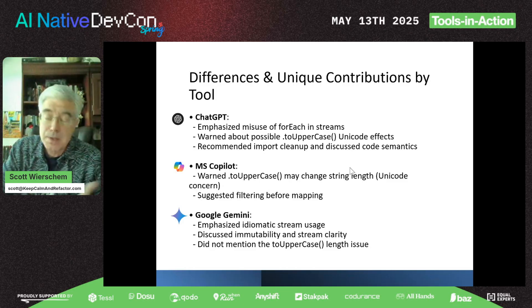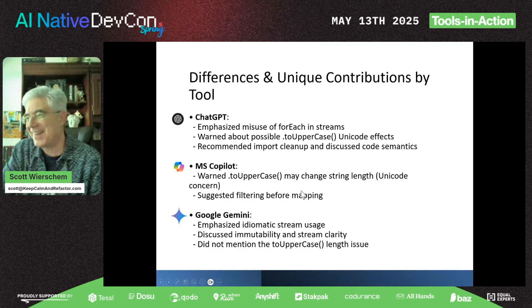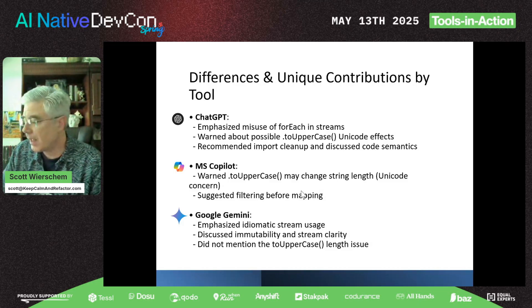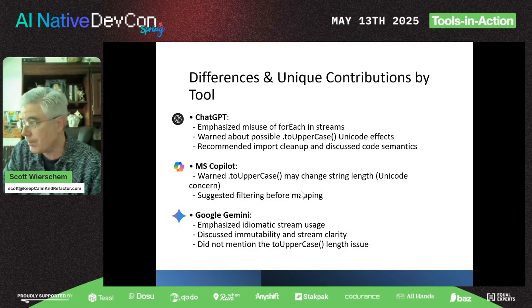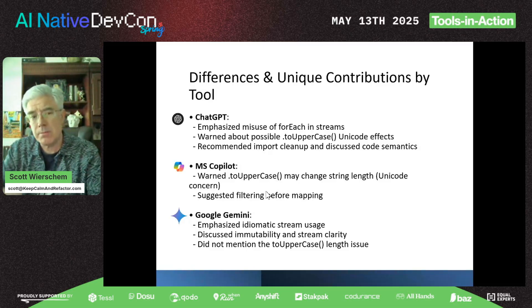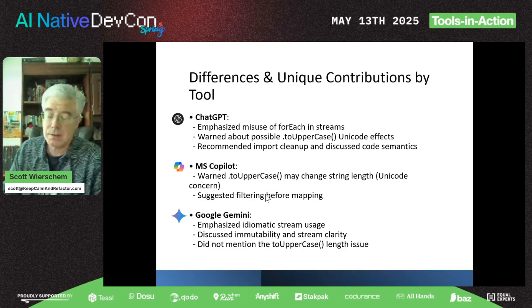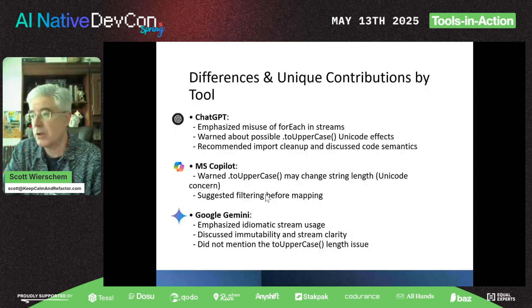Since I'm a Windows developer, I tried MS Copilot — because if you're on Windows, you just can't get away from it. It found the Unicode uppercase problem and noted that it may change the string length. It also suggested doing the filtering before the mapping so that it would be less confusing.